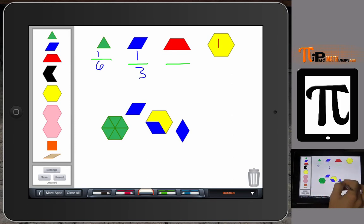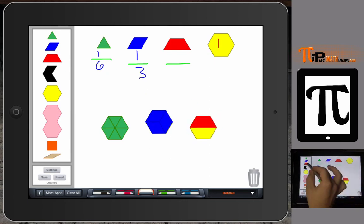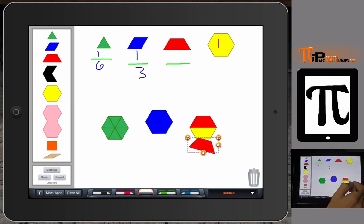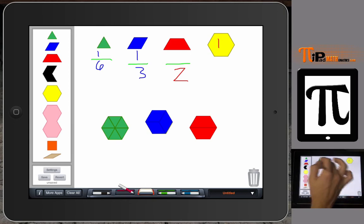And then the last bit we will do with our red trapezoid. So we have our red trapezoid, and we notice that it takes two of these to make up the whole. So therefore, if two makes up the whole, that becomes our denominator. That's how many parts make up the whole. And therefore, one trapezoid is going to be one half of the whole, which is the hexagon.